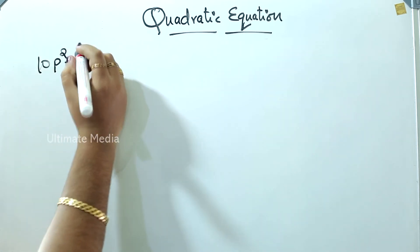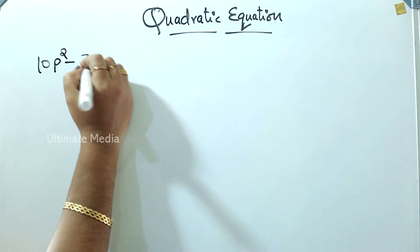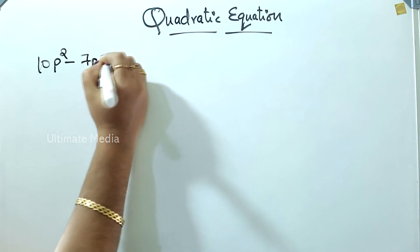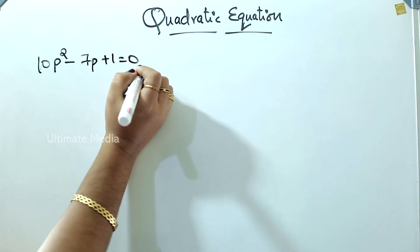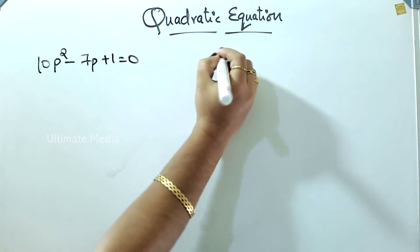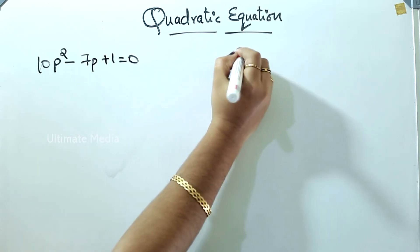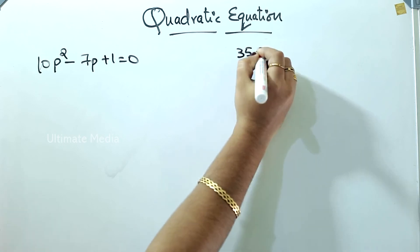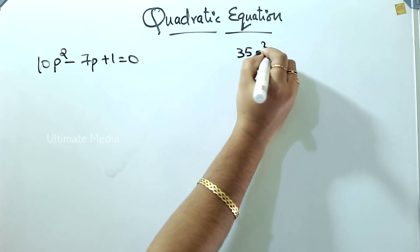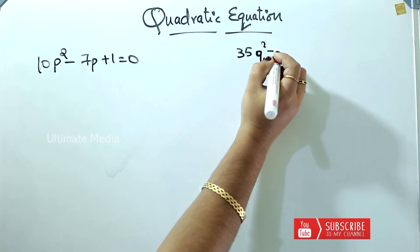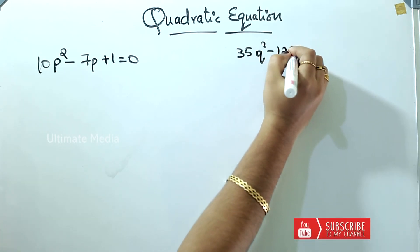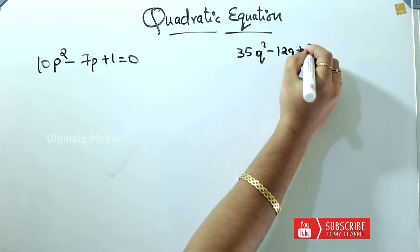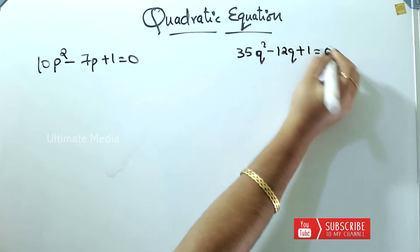10p squared minus 7p plus 1 is equal to 0. Next, 35q squared minus 12q plus 1 is equal to 0.